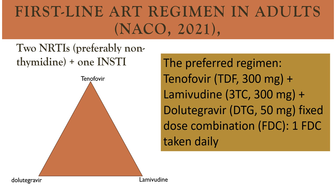According to the National AIDS Control Organization, the first-line antiretroviral regimen in adult patients consists of two drugs from the NRTI group and one drug from the integrase inhibitor group. Tenofovir and lamivudine are from the NRTI group, and dolutegravir is from the integrase inhibitor group. The fixed-dose combination of tenofovir 300 mg, lamivudine 300 mg, and dolutegravir 50 mg should be used daily.